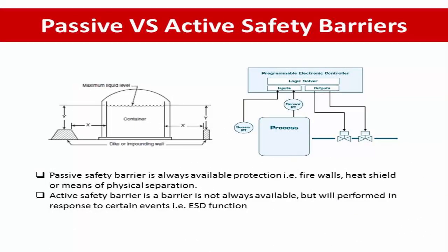Next: passive and active safety barriers. A passive safety barrier is one whose safety function is always available as an inherent property. Examples include a firewall, heat shield, or means of physical separation such as a fence. An active safety barrier is one that is not always available but will be activated upon certain events. For example, an emergency shutdown system (ESD) in a process plant is an active safety barrier which will be activated when a hazardous situation occurs.